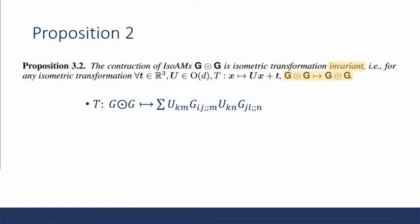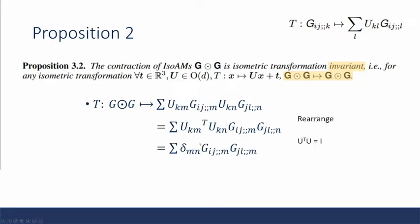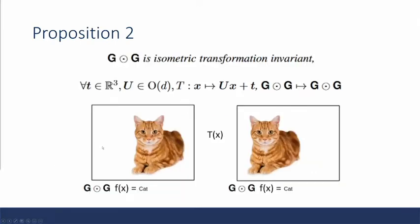And that leads us to our second proposition, which is that an iso-adjacency matrix contracted with itself results in an isometric transformation invariance property. The paper goes on to prove that if we try the transformation of G contracted with itself, it gives us this, based on proposition one. We're going to rearrange it, and then we see that the two orthogonal transformations are beside each other, and out of the property of orthogonal matrix, this turns into an identity, which just goes away. And as you can see, this final result is just the definition of the contraction of G that we first defined. And bringing it back to the example of the cat, essentially if we multiply a given function and we multiply it by G contracted with itself, despite the transformation of the data itself, it still gives us the same output.